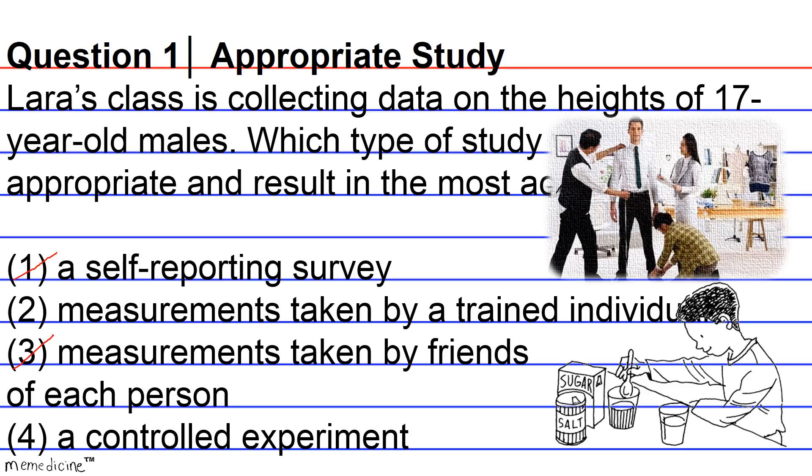And last but not least, we have answer choice 4: a controlled experiment, which we see pictured here. This has nothing to do with measuring heights. Since the class is not planning to compare heights under different circumstances, whether someone ingests a lot of sugar or salt, a controlled experiment is definitely not necessary and is inappropriate for this type of data collection.